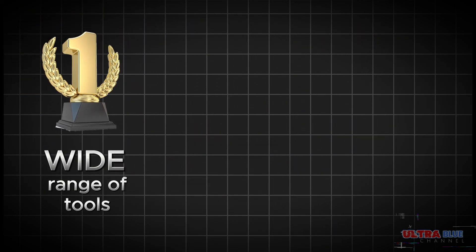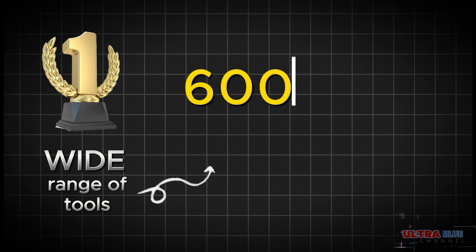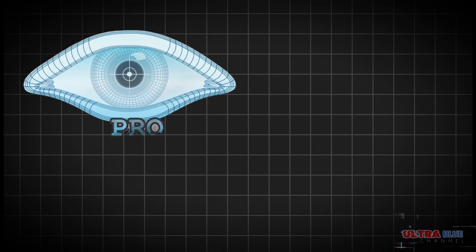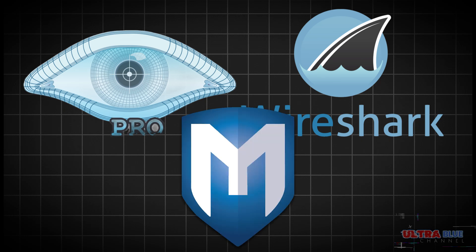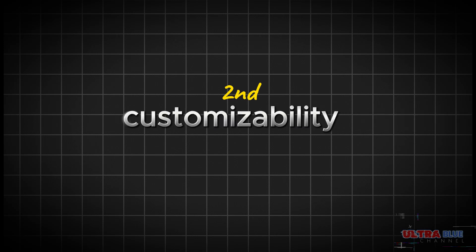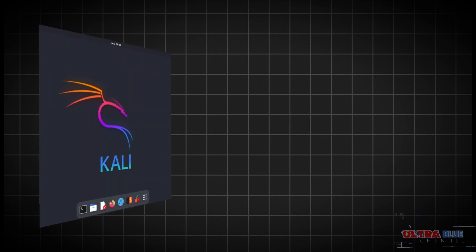Let's explore some key features that make Kali Linux stand out. First is its wide range of tools — Kali Linux comes pre-installed with over 600 security tools, including Nmap, Wireshark, Metasploit Framework, John the Ripper, and Aircrack-ng.